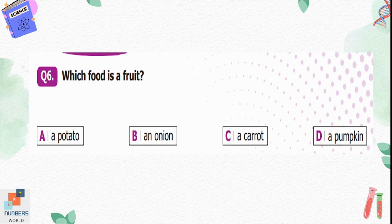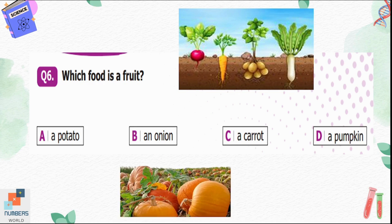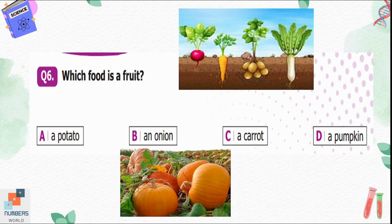Question number six: which food is a fruit? Option A, a potato; B, an onion; C, a carrot; D, a pumpkin. Potato, onion, and carrot are root vegetables that grow under the ground. A pumpkin is a fruit that grows above the ground. So option D is the correct option.